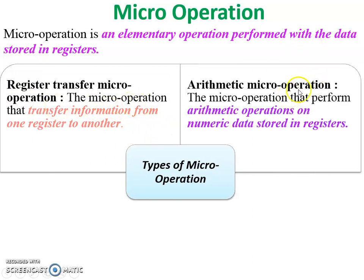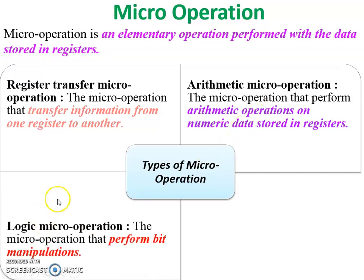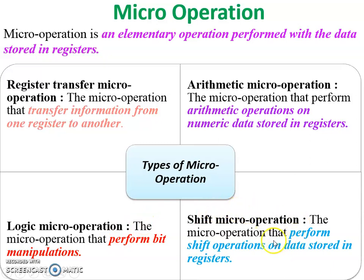The second type is arithmetic micro operation, which performs on numeric data stored in a register — operations like addition, subtraction, multiplication, division, etc. Third is logic micro operation, which performs bit manipulation where bits stored in a register are changed after the operation — like AND, OR, XOR, and complement. The fourth is shift micro operation, in which a shift operation is performed on data stored in a register, either right shift or left shift.